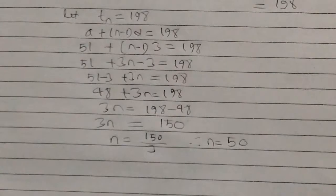So n is equal to 50. There are 50 numbers between 50 and 200 that are freely divisible by 3.